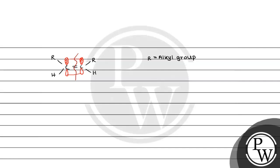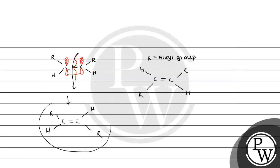For example, consider the trans compound. If we break this double bond and reform it, it becomes the trans form. Note that if this rotation were possible, the cis compound would convert into the trans compound. But we know that cis and trans do not interconvert. Since cis-trans cannot convert into each other, they show geometrical isomerism.